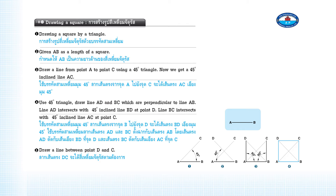Use the 45-degree triangle. Draw lines AD and BC which are perpendicular to line AB. Line AD intersects with the 45-degree inclined line BD at point D. Line BC intersects with the 45-degree inclined line AC at point C.